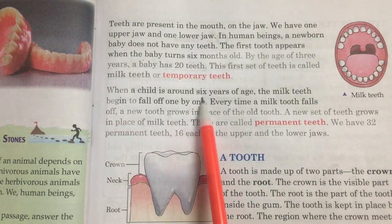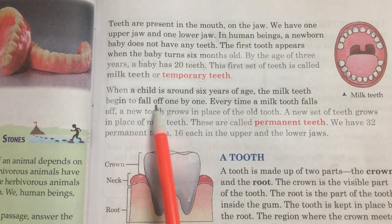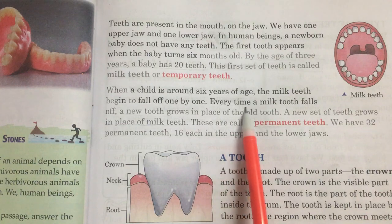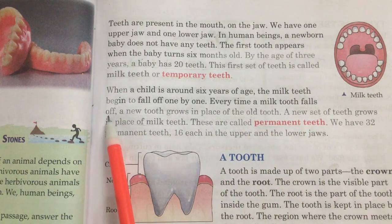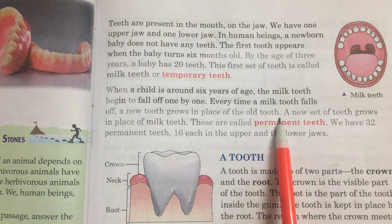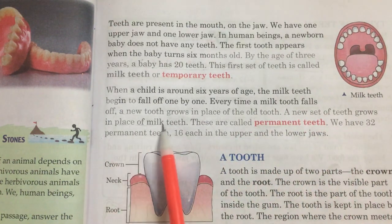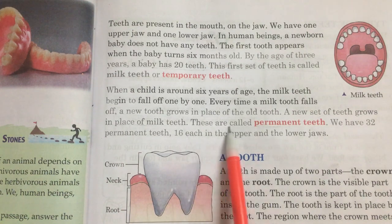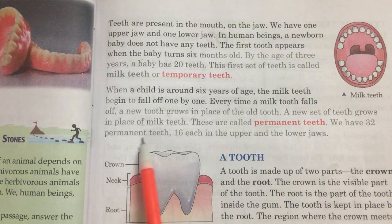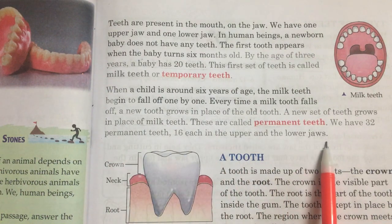When a child is around 6 years of age, the milk teeth begin to fall off one by one. Every time a milk tooth falls off, a new tooth grows in its place. A new set of teeth grows in place of milk teeth. These are called permanent teeth. We have 32 permanent teeth, 16 each in the upper and the lower jaws.